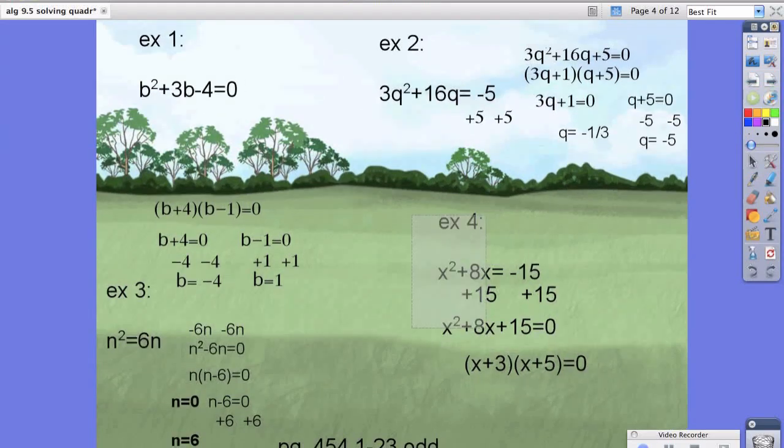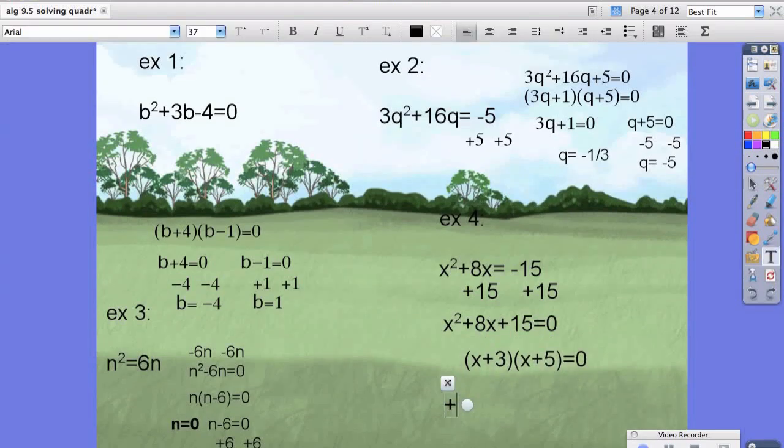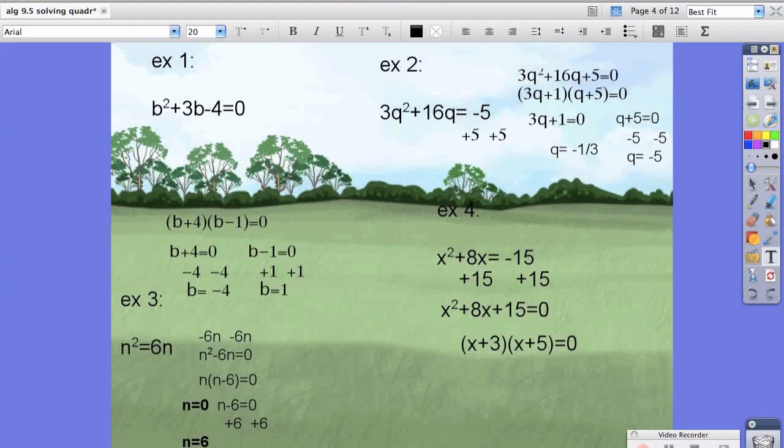Then again, using branching, or because of the zero product property, we have x plus 3 equals zero, and we have x plus 5 equals zero. We're going to subtract 3 from both sides. We're left with x equals negative 3. This one, we're going to subtract 5 from both sides, and we're going to be left with x equals negative 5.